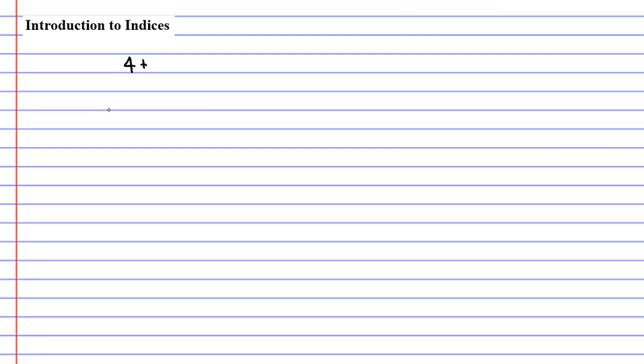This video is titled Introduction to Indices. First, I would like to talk a little bit about repeated addition. Let's say I wanted to add the number 4 a number of times — let's say we added it 5 times. We know there is an easier way to write this. Rather than writing 4 plus 4 plus 4 plus 4 plus 4, we can write it as 4 times 5.